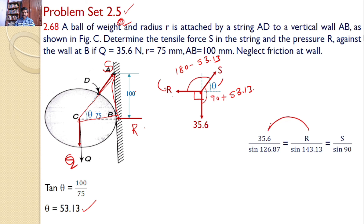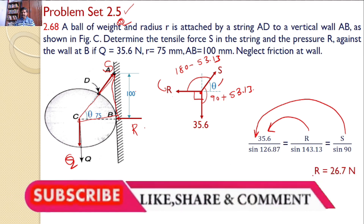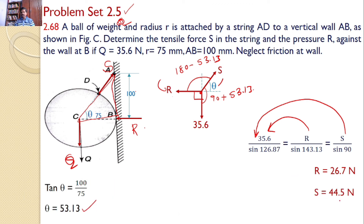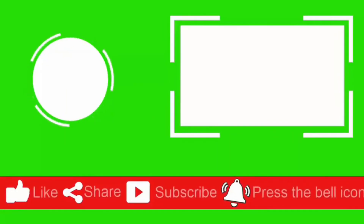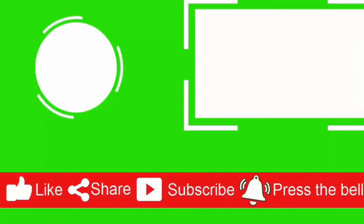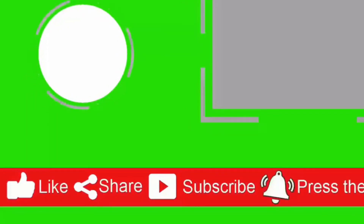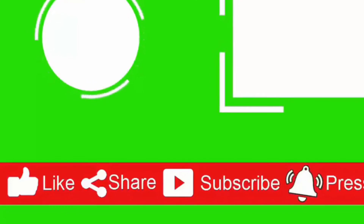By using these two expressions I can find the reaction force at B, and by using these two expressions I can find the tensile force in the string S. Hence, R is equal to 26.7 Newtons and S is equal to 44.5 Newtons. These two are the answers for the given problem.